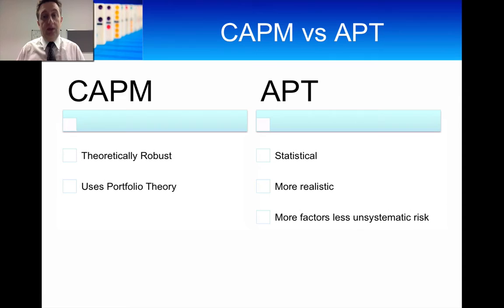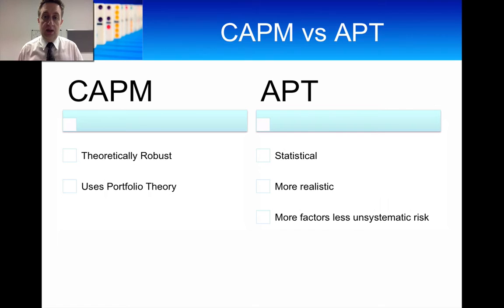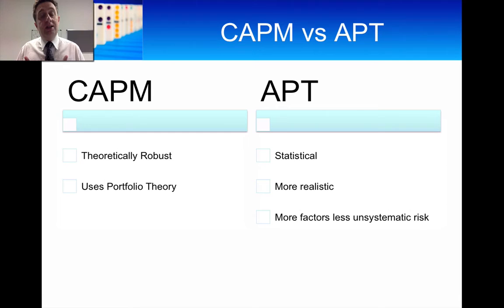We arrived at the CAPM-type expression by creating a linear relationship between excess returns and beta, and then spoke about how underpricing and overpricing will be exploited by traders and investors, so that in equilibrium the pricing produces a straight line — a linear relationship between returns and beta. That was a one-factor model, but with APT you have the flexibility to extend the number of factors to as many as you want.